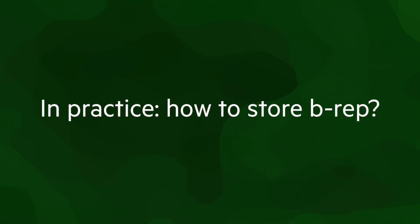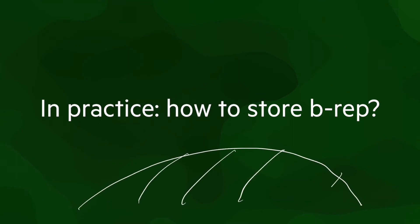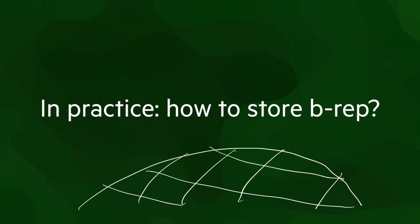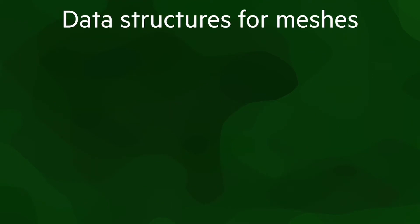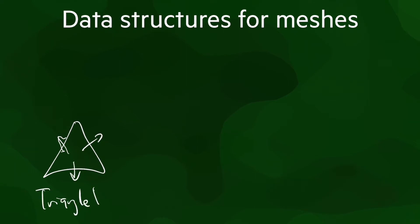Now let's look at how we can store 3D objects in practice using boundary representation. Since we start by subdividing large 2D surfaces, which creates structures composed of many similar cells, objects represented using BRep are commonly called meshes. There are three kinds of data structures that are typically used to store meshes: triangle-based data structures, which mainly store triangles with links to their neighbors; and edge-based data structures, which mainly store either half-edges or full edges that are linked to the next ones around the polygon.